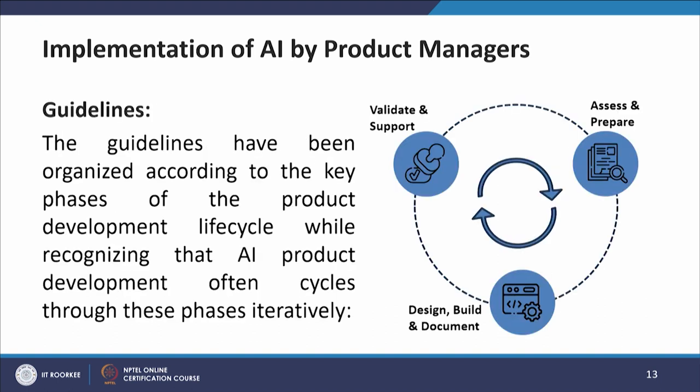The guidelines are organized according to the key phases of the product development life cycle, recognizing that AI product development often cycles through these phases iteratively. The phases are: assess and prepare, design, build and document, and validate and support.